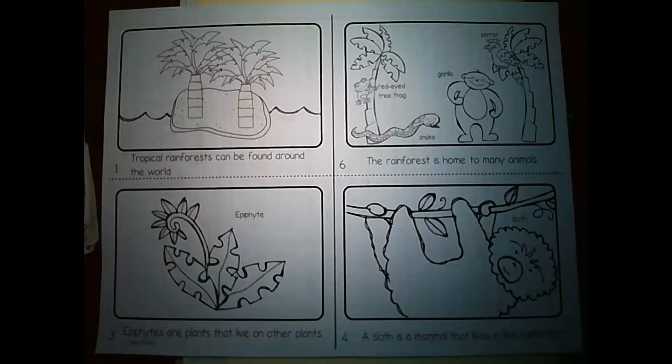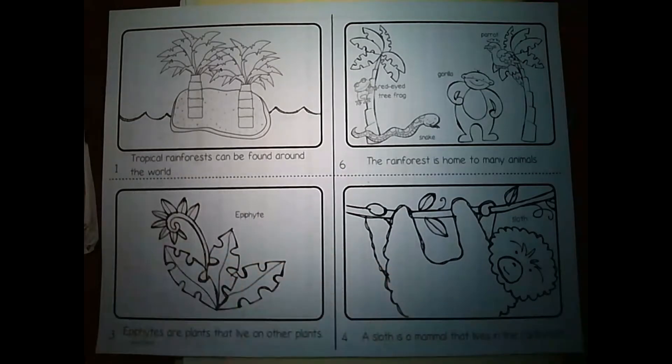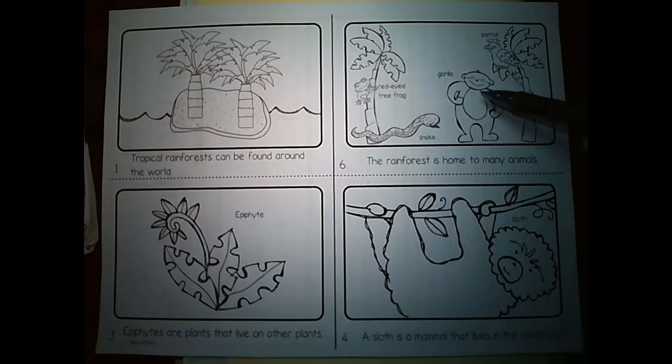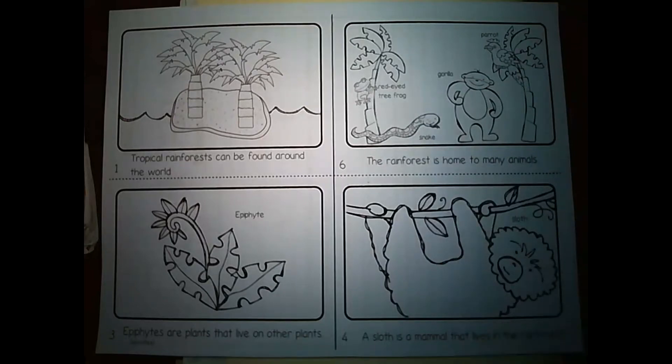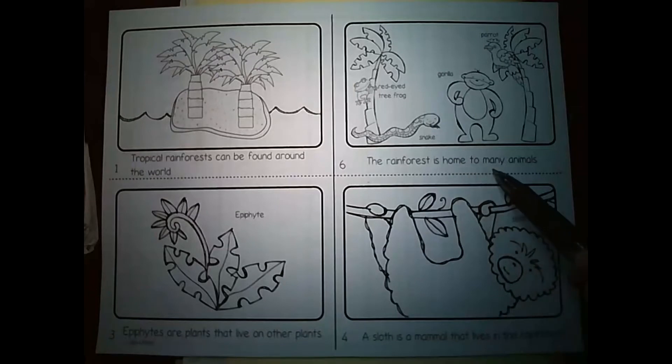Here's the next page. These are the other pages that would be in our book if we were to make it into a book. Tropical rainforests can be found around the world. This next one here has a bunch of animals in it. It's got a parrot, it's got a gorilla, it's got a snake, red-eyed tree frog, looks a little bit like my sister. Don't tell her I said that. Let's see, it says the rainforest is home to many animals. It's a really good picture here to show that.